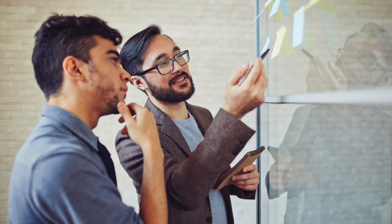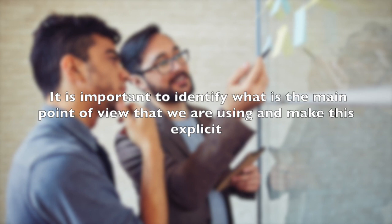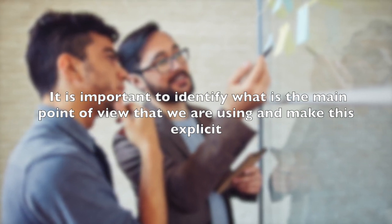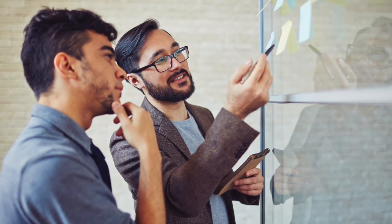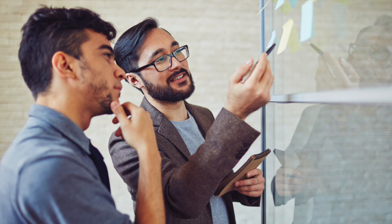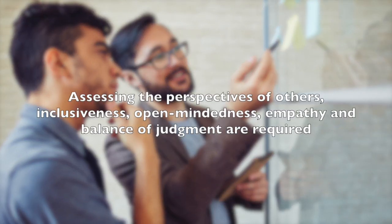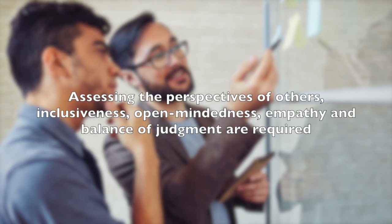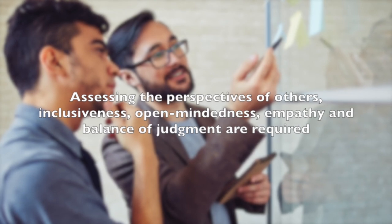One's reasoning will only ever be a partial account of the world, and it is important to identify what is the main point of view that we're using and make this explicit. In identifying points of view, one can seek other perspectives and identify their strengths as well as their weaknesses. In presenting one's point of view and assessing the perspectives of others, inclusiveness, open-mindedness, empathy, and balance of judgment are required.